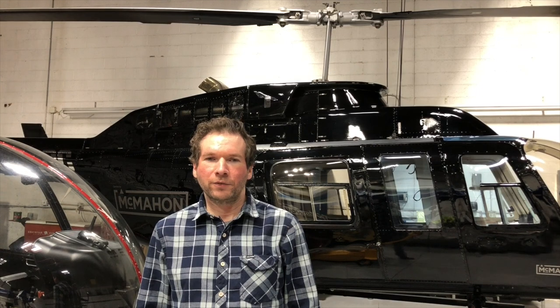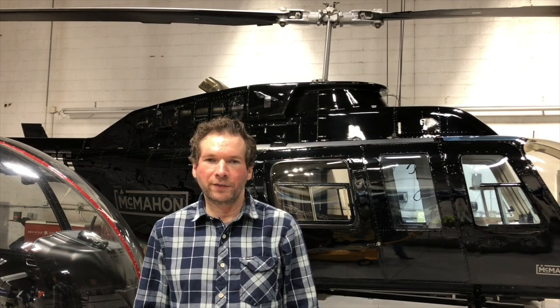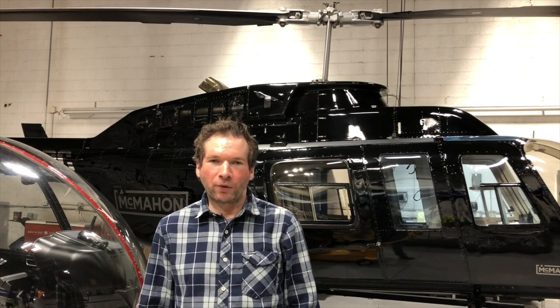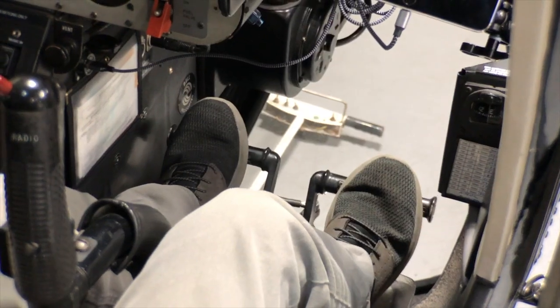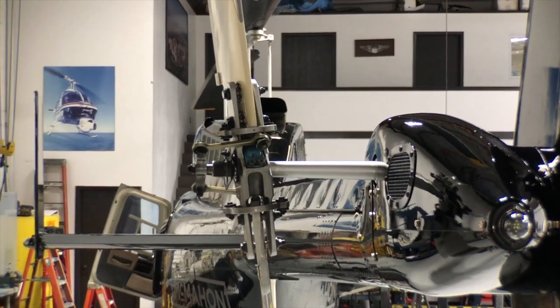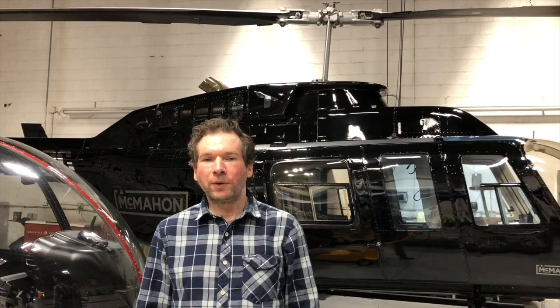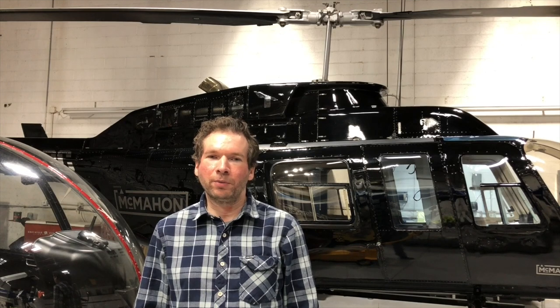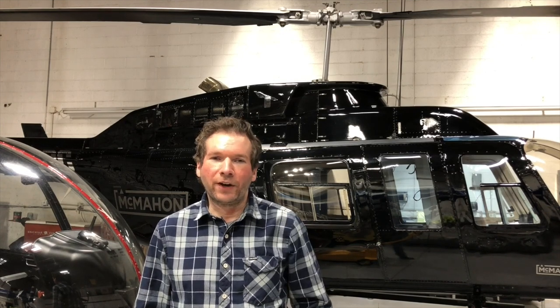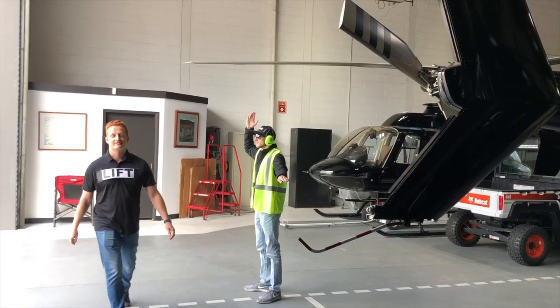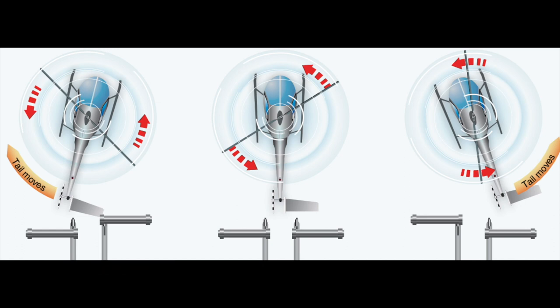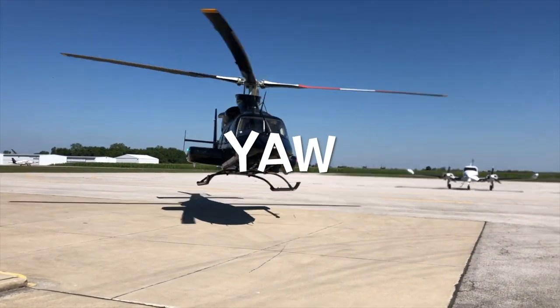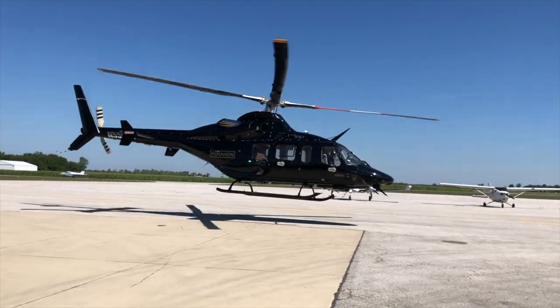Let's start with the pedals, which we call the anti-torque pedals. No, that's not the gas and the brake — nor are they rudder pedals, like airplane pilots like to say. Those actually control the pitch of the tail rotor blades, which, if you remember from previous videos, indirectly controls the blade's angle of attack, and therefore how much lift they produce. Yes, the tail rotor produces lift just like the main rotor — it just directs that lift sideways. By moving these pedals, the pilot can control the helicopter yaw, that's the direction that the helicopter is pointed.